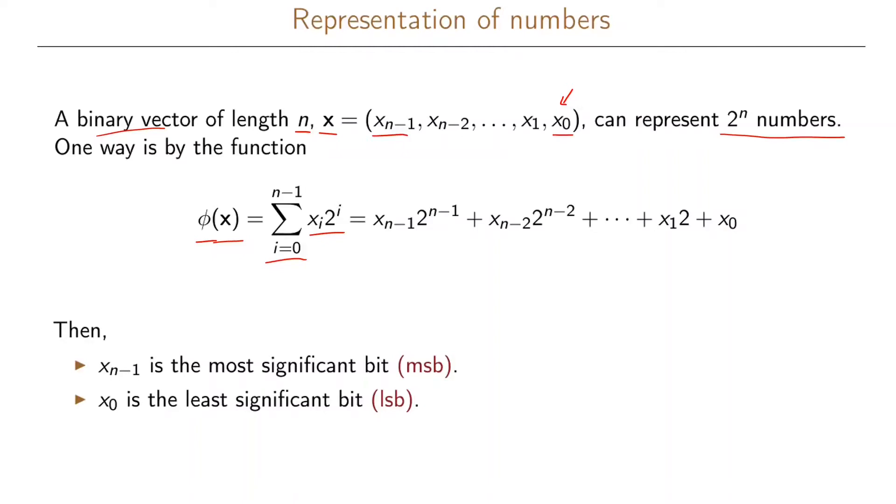If we expand this we can write this as follows, and here we start from the back because this is typically how we write the numbers in the vector, so we have x_0 plus x_1 times 2 and up until x_(n-1) times 2 to the n-1. When we do it in this way we are going to call x_(n-1) the most significant bit in our vector and we're going to call x_0 the least significant bit in our vector.